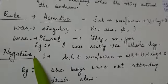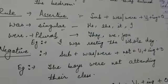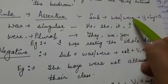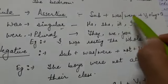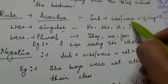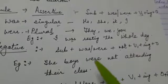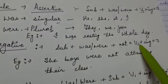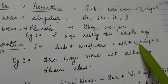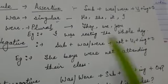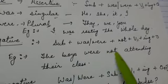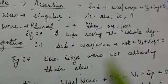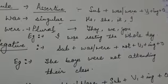Next is the negative. To make this assertive sentence negative, we will add 'not' after was/were — this is the helping verb, so we will add 'not' after it. Subject + was/were + not + verb's first form + -ing + object. For example, 'The boys were not attending their class.' Jo boys hain, woh apni class attend nahi kar rahe the.